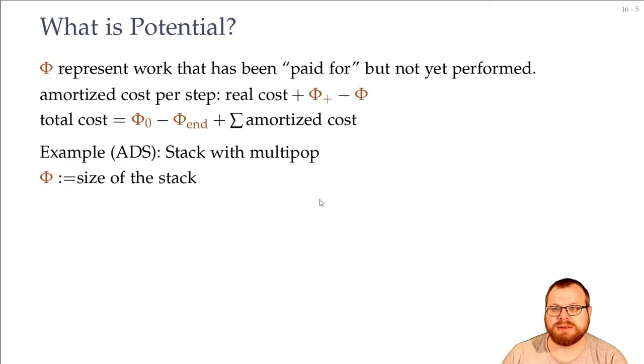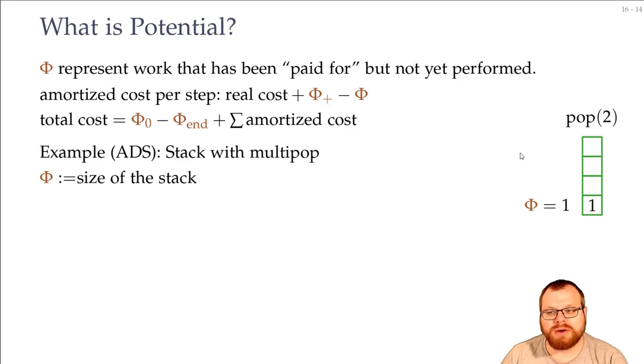So how does this look like? We have, let's say, in the beginning, an empty stack, so the beginning potential is zero. Now we push some number, it gets here, and the potential becomes one. Push another one, potential becomes two. Push another one, potential becomes three. And now we want to pop two numbers, and the potential also goes down by two. Now, the real cost that we had was one for each of the push, and k for any pop of k.